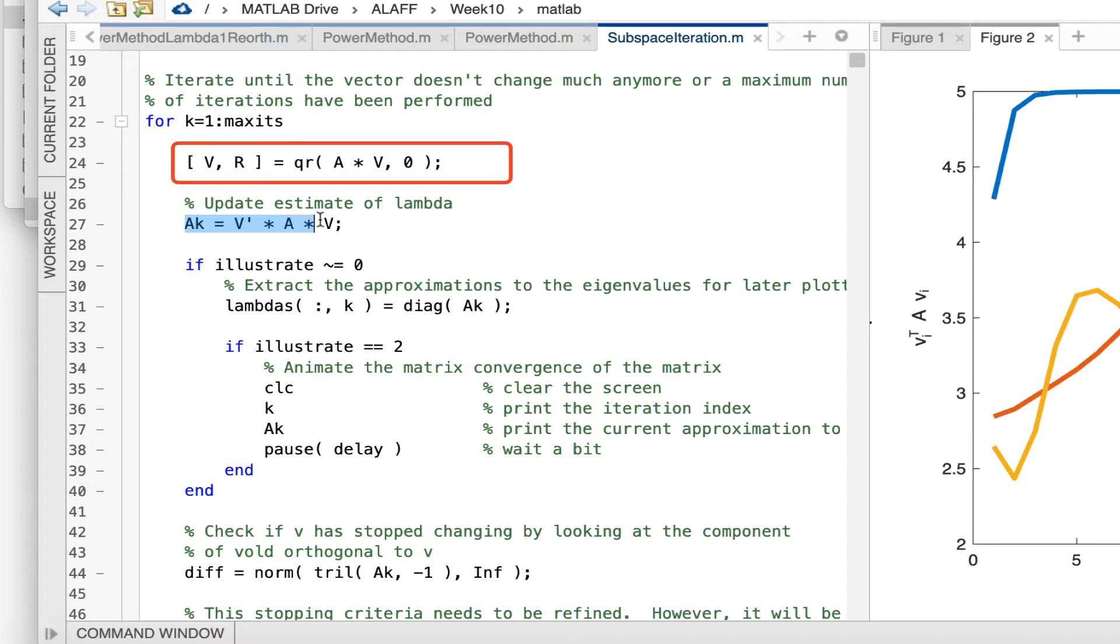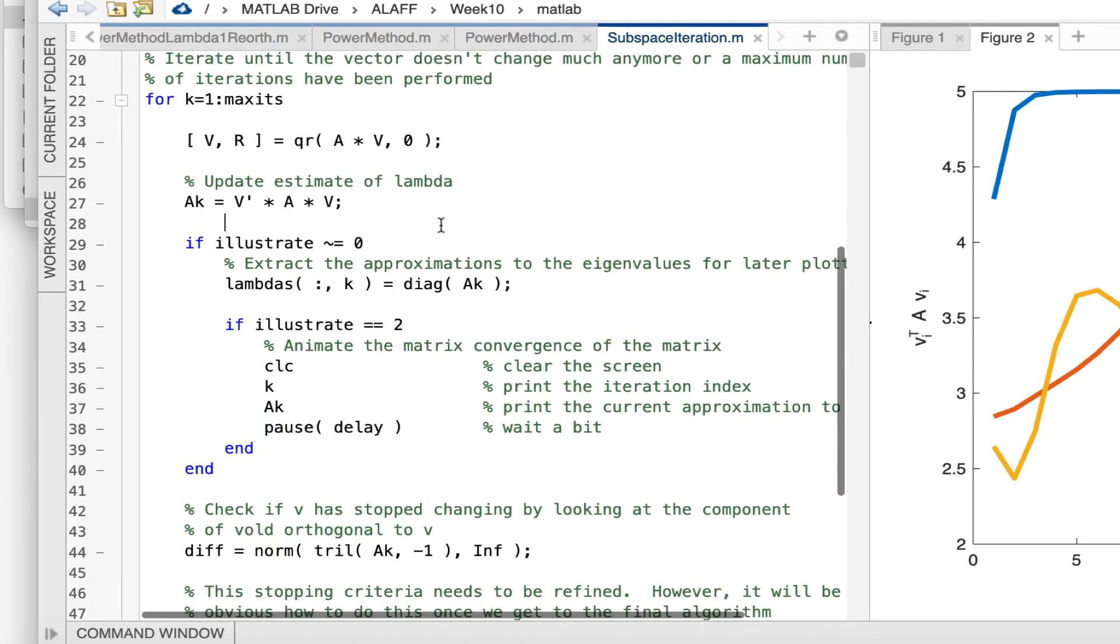And then here is that matrix AK, where the matrix AK in theory will eventually become a diagonal matrix if the columns of V become eigenvectors of matrix A.